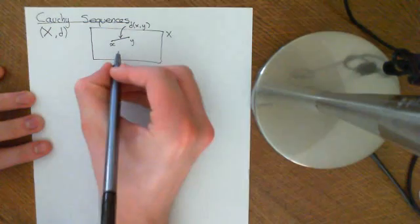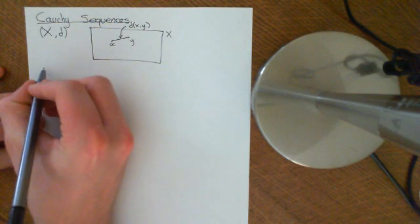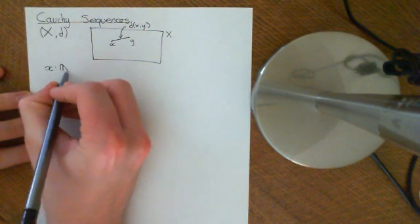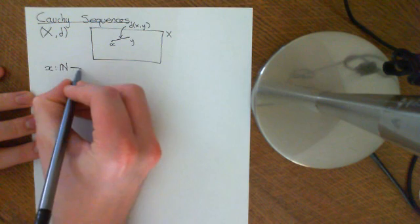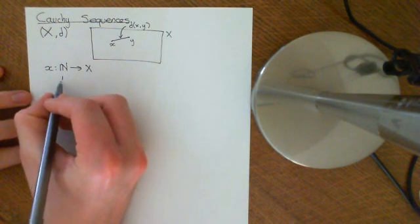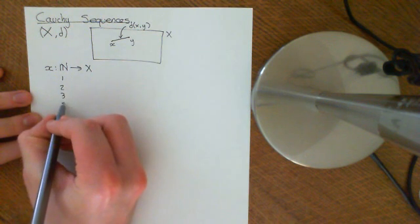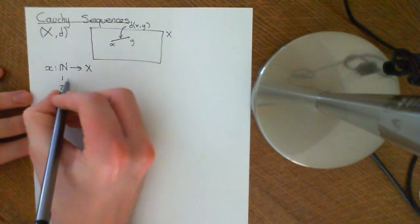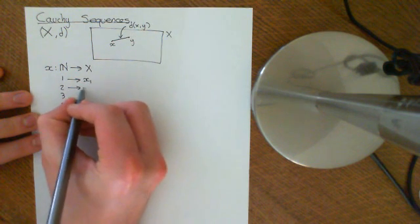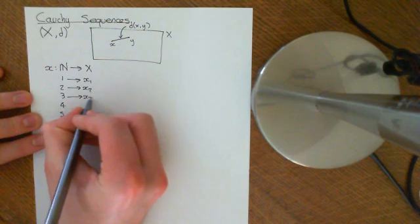We can have a sequence in this metric space. A sequence, strictly speaking, is a function from the natural numbers into your metric space, big X. What it does is ascribe to every natural number 1, 2, 3, 4, 5 an element of the metric space. We'll call that little X1, little X2, little X3, little X4, etc.